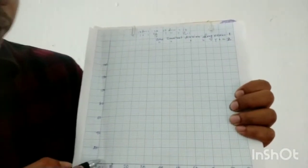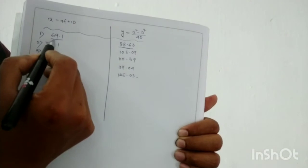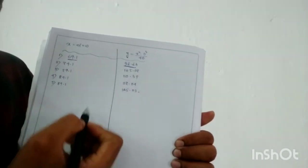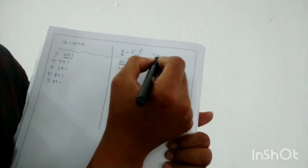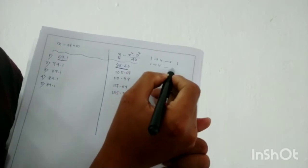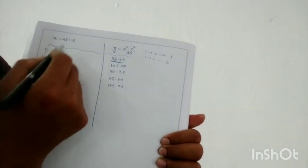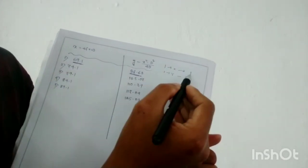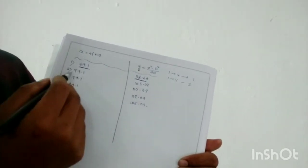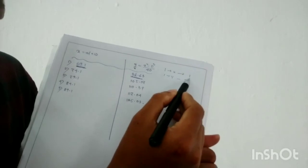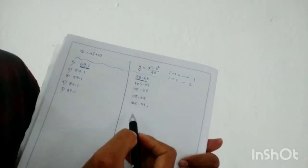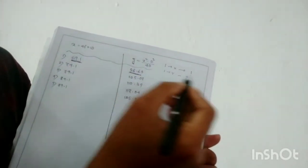Now in the table, the coordinate of the first point is 69.1 and 98.60. We are going to convert these values into divisions. One smallest division along the x-axis is 1 unit, and along the y-axis is 2 units. Along the x-axis: 69.1 divided by 1 equals approximately 69 divisions.